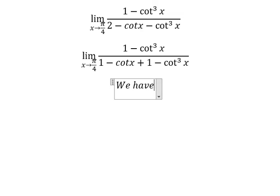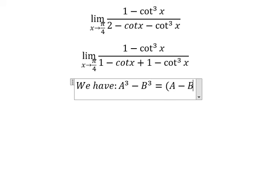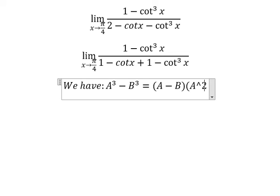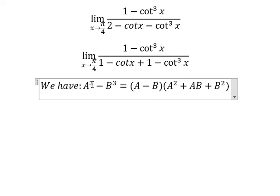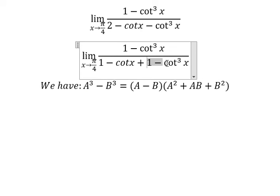Next we have the formula in here: a to the power of 3 minus b to the power of 3 equals a minus b multiplied by a square plus a b plus b square. So we can apply this formula for this one and this one.